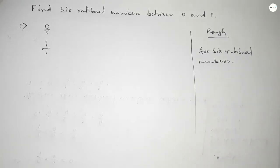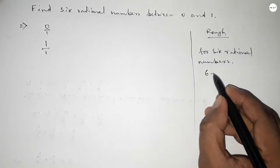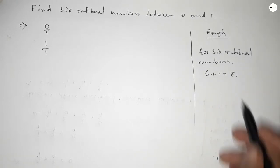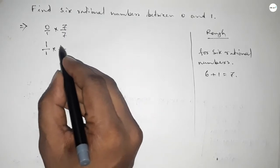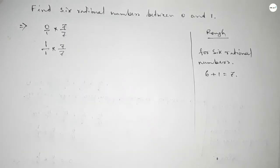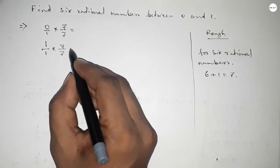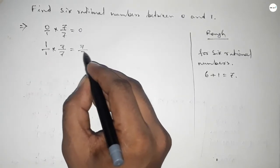We should multiply both numbers by 6 plus 1 equals 7. So we get 0 times 7/7 equals 0, and 1 times 7/7 equals 7/7.